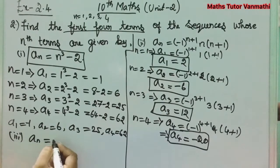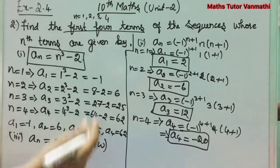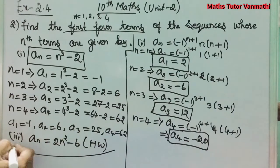The third subdivision is a_n = 2n² - 6. Using the same method, you try this as homework.